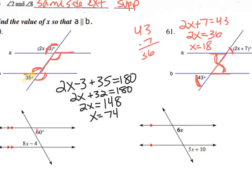I have alternate interior angles. Alternate interior angles I know, I set equal. So 8x minus 4 equals 60. 8x equals 64, and x equals 8.